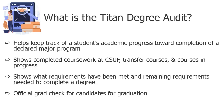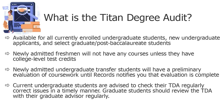The TDA is also the official grad check for candidates for graduation. It is available for all currently enrolled undergraduate students, new undergraduate applicants, and select graduate post-baccalaureate students. Newly admitted freshmen will not see any courses unless they have college-level credits such as advanced placement tests. Newly admitted undergraduate transfer students will see a preliminary evaluation of their transfer coursework until Records notifies them that the final evaluation has been completed.